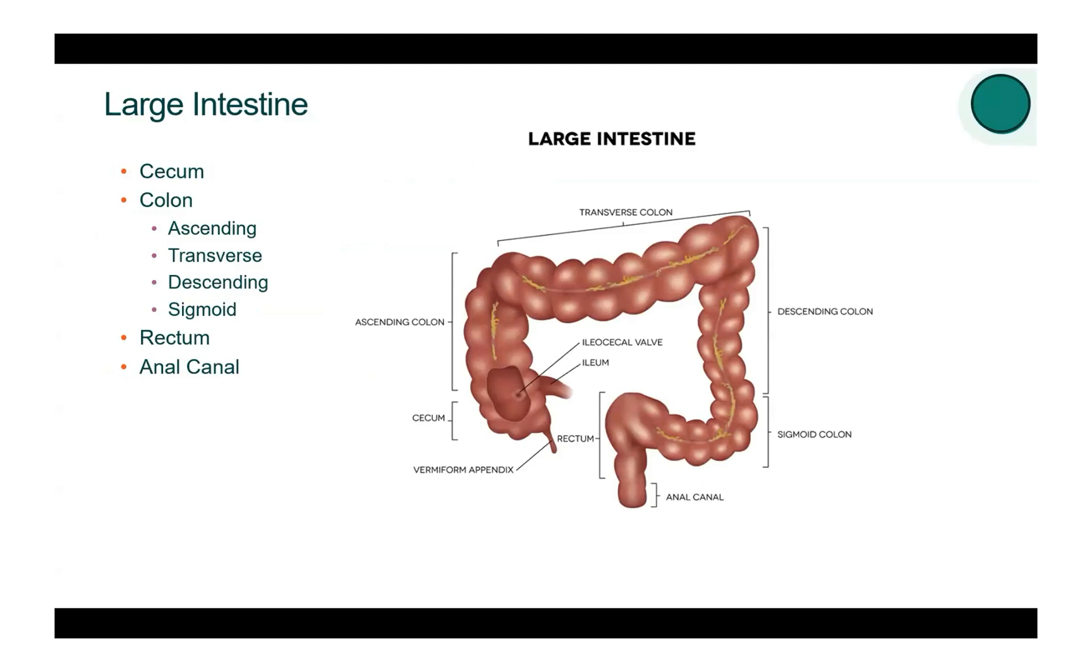The large intestine begins just after the ileocecal valve and the cecum with the appendix attached at the bottom, then the colon, rectum, and anal canal. There are four portions of the colon. The ascending colon proceeds from the ileocecal valve upward to the hepatic flexure, becomes the transverse colon, and then turns downward to become the descending colon at the splenic flexure. The descending colon gives way to the sigmoid colon and ends at the rectum.